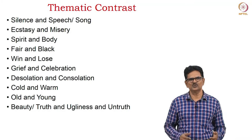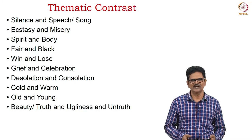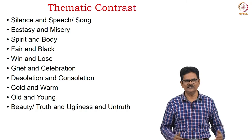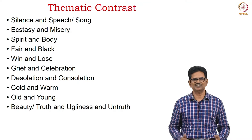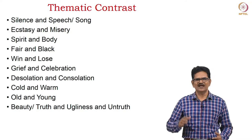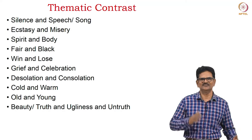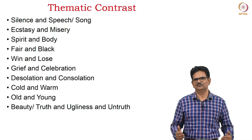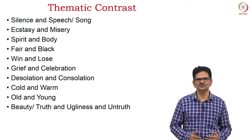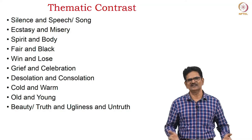When we pay attention to the thematic contrasts in this poem, we identify pairs of words like silence and speech, ecstasy and misery, spirit and body, fair and ugly, win and lose, grief and celebration, desolation and consolation, cold and warm, old and young, beauty and truth versus ugliness and untruth. This silent form sings a song, it tells a history — that's why we have this silence and speech. Associated with these contrasts, we come to beauty and truth on the one hand, and ugliness and untruth on the other.